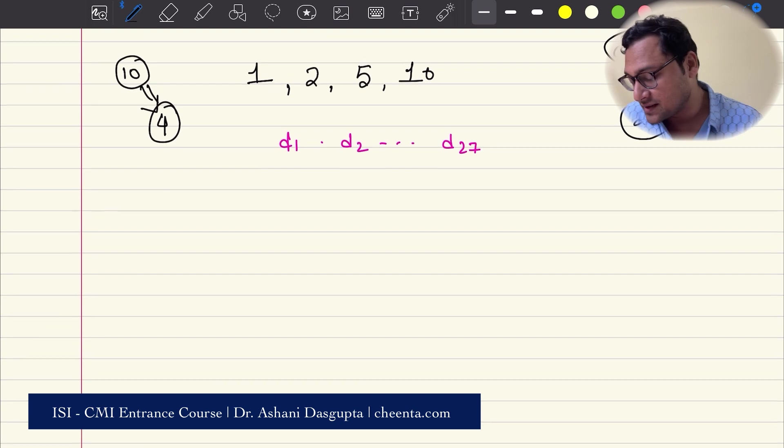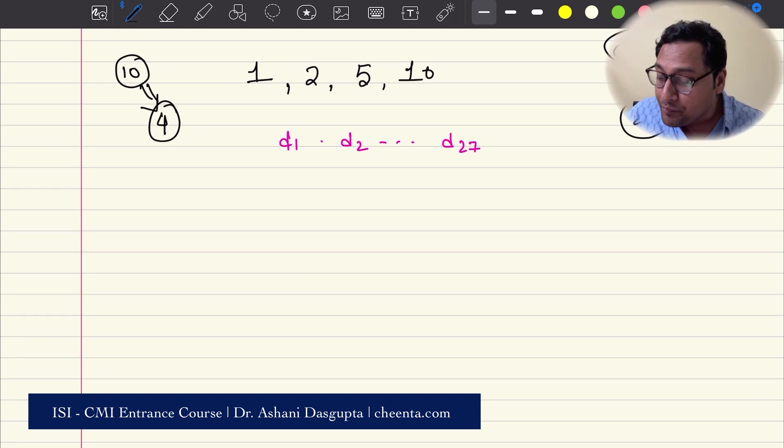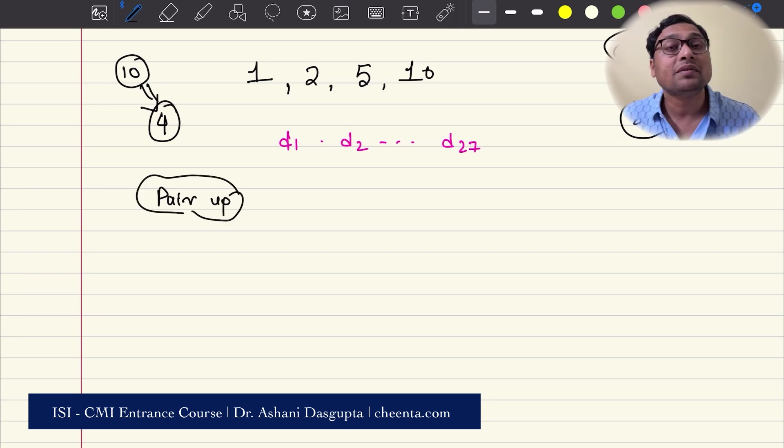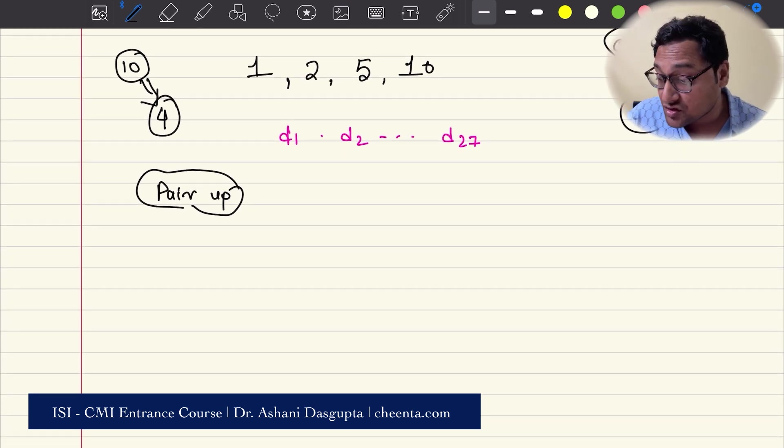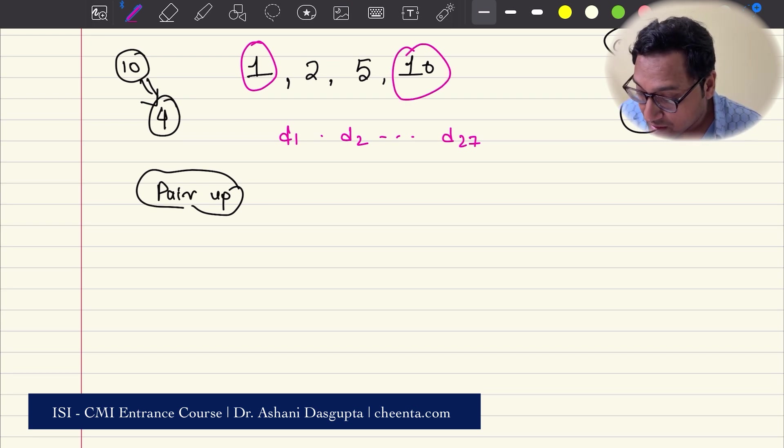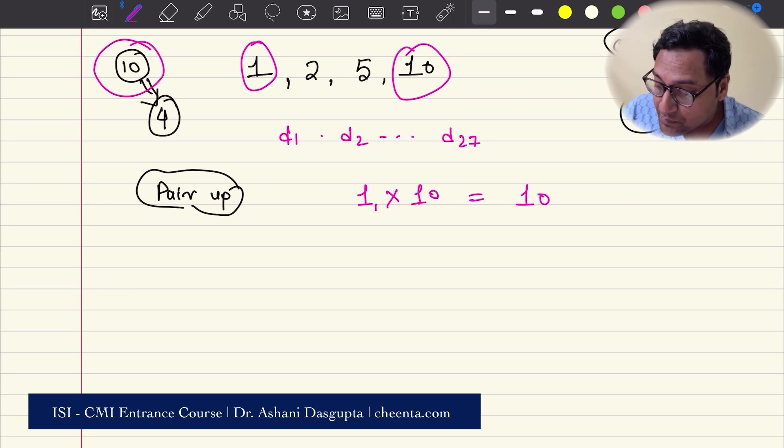What I'm going to do is I'm going to pair up the divisors. It's a very simple but powerful strategy. If you see carefully, divisors actually come in pairs. For example, 1 and 10, you can pair them up. And what is so special about this pair? Well, if you multiply them, you get the original number, 10. Similarly, you can pair up 2 and 5. So 2 times 5 is again N. This is how you pair up the divisors.